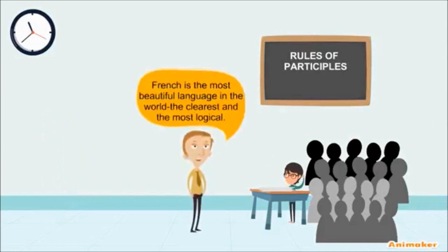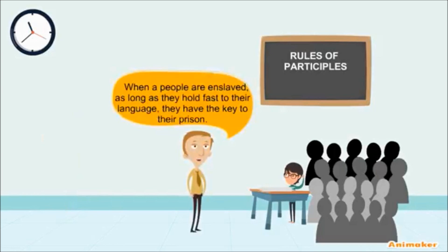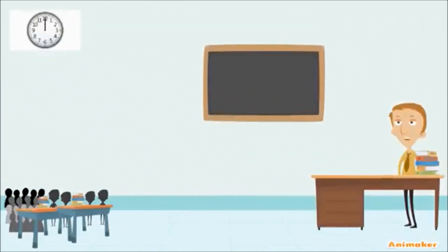M. Hamill then goes on to talk about the French language — that it's the most beautiful language in the world, the clearest and the most logical. That we must guard it among us and never forget it, because when a people are enslaved, as long as they hold fast to their language, it is as if they had the key to their prison. Franz could see that M. Hamill was trembling with emotion while speaking. M. Hamill teaches the students grammar, writing, and history. Franz is surprised that he can understand everything taught very clearly and that M. Hamill has explained everything so clearly and so patiently.